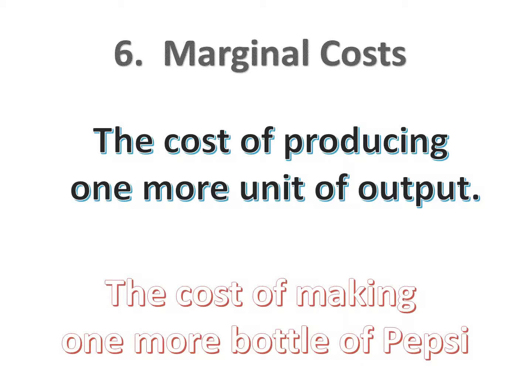Marginal cost is how much total costs go up if you produce one more unit of output. Since fixed costs don't increase as you produce more, marginal cost is asking: if we increase output by one, by how much do our variable costs increase? For example, how much does it cost Pepsi to make one more bottle? Or what's the cost to an oil company of making one more gallon of gas? For a software company selling over the internet, the marginal cost of selling one more software package could actually be zero — even though they spent a lot on fixed costs developing the software, it may cost nothing to sell one more copy.